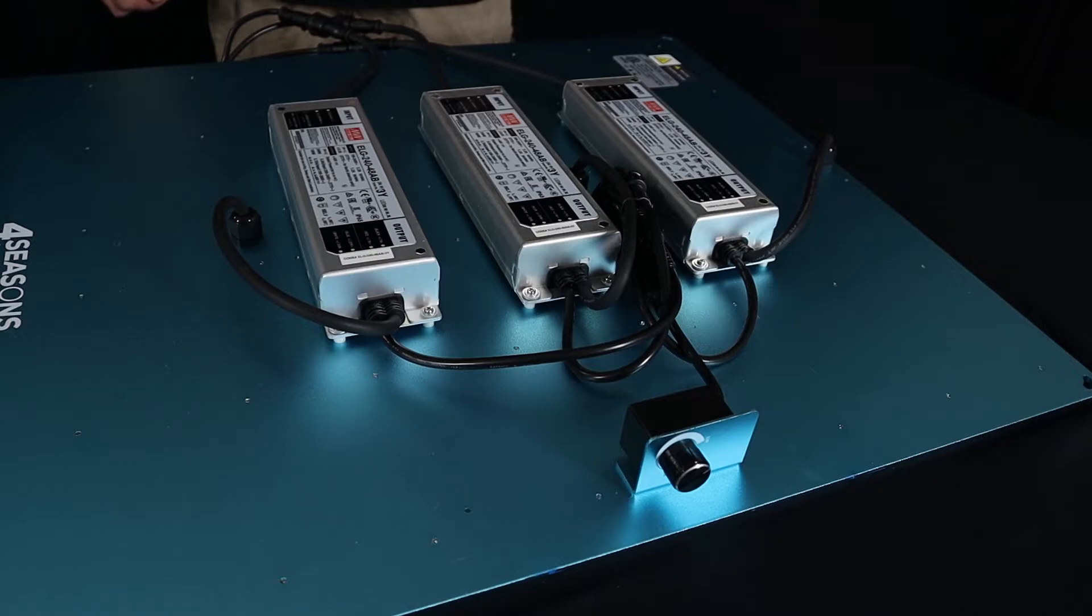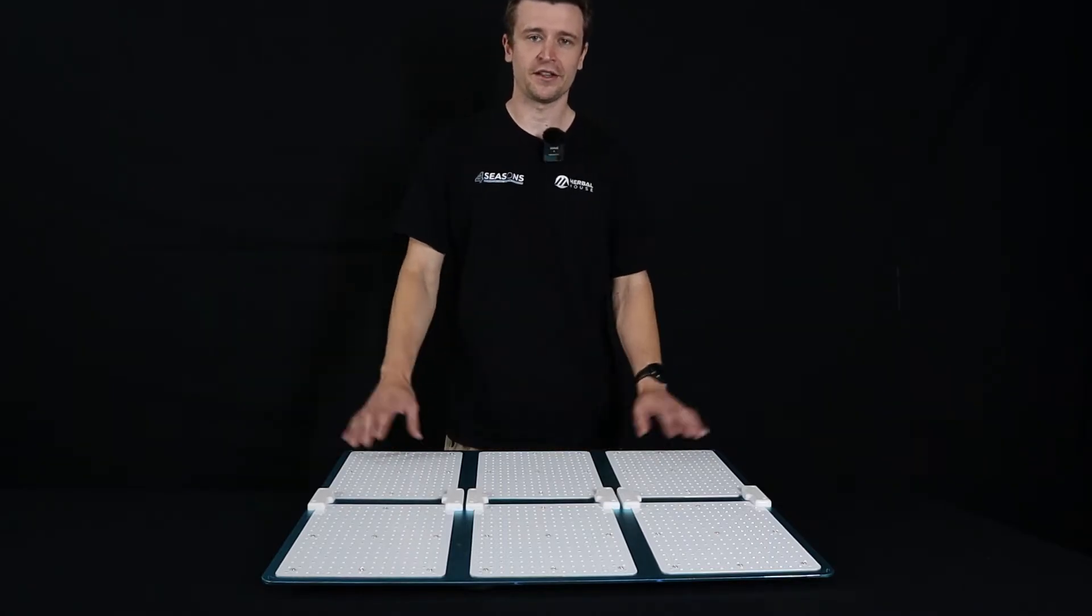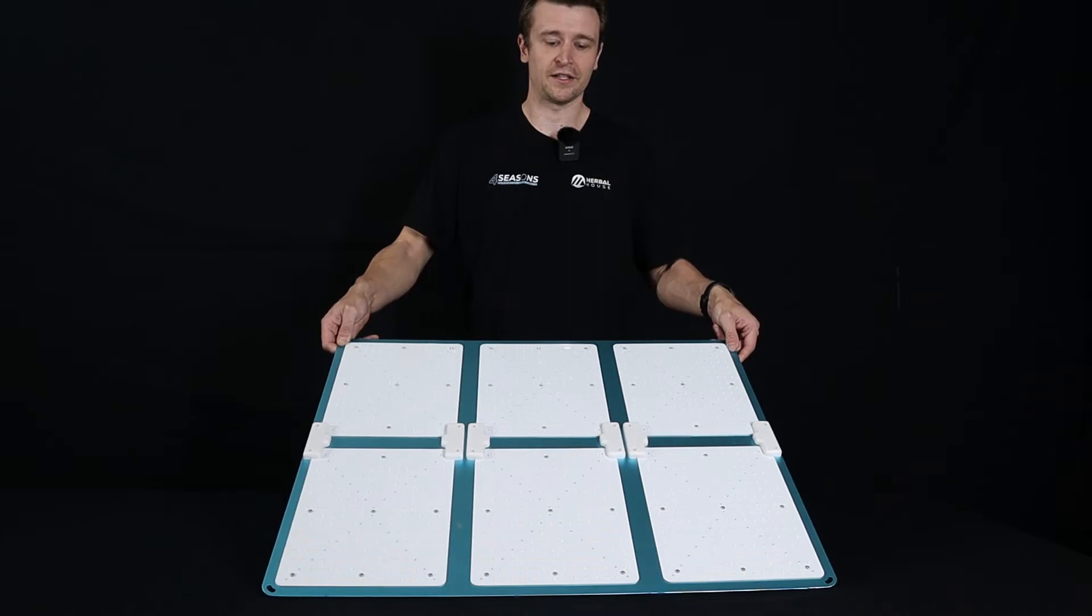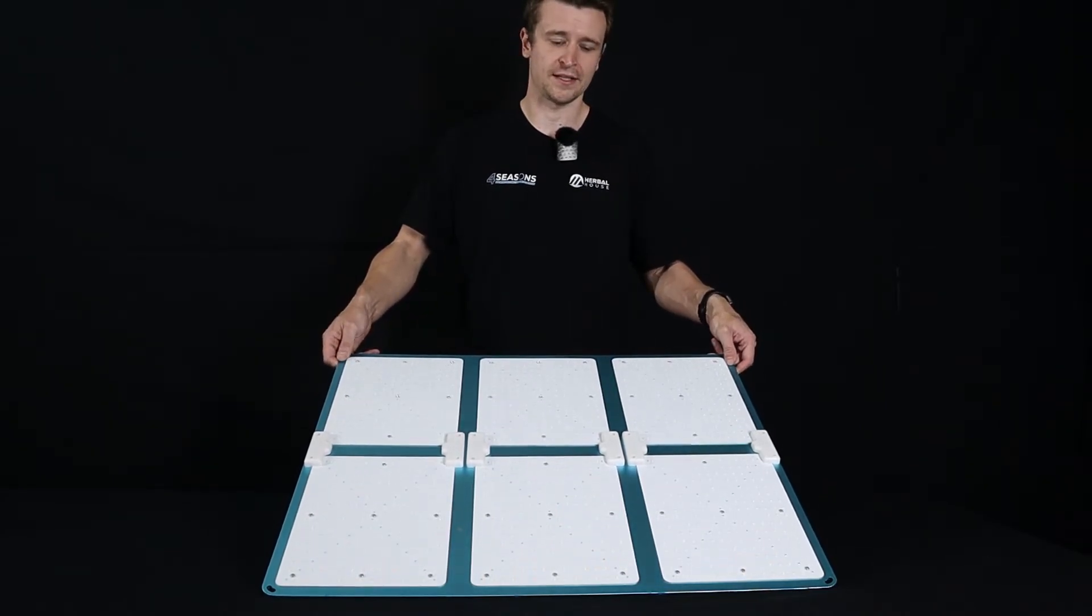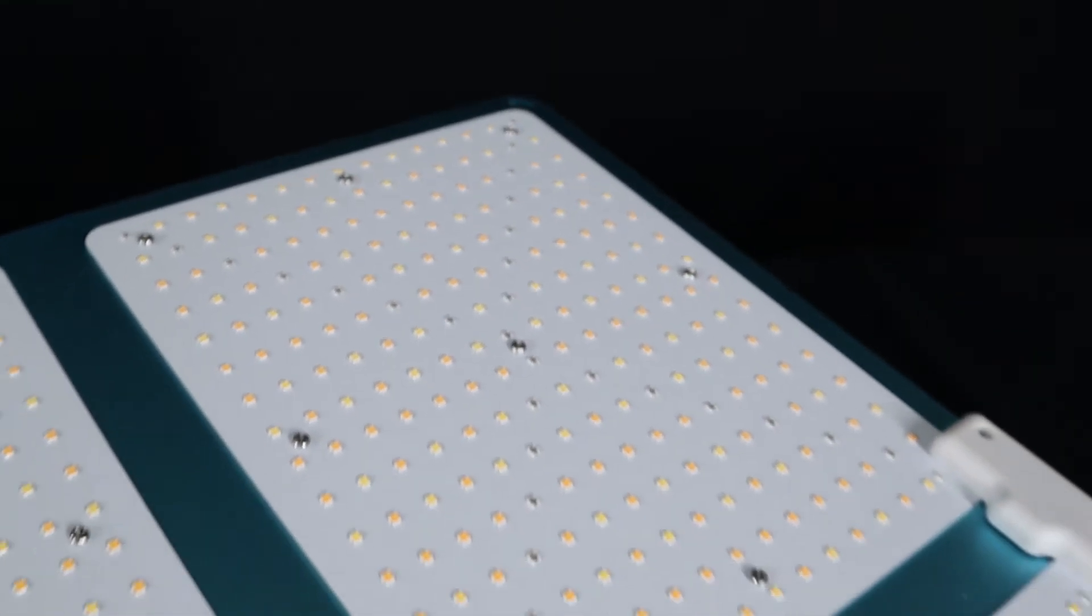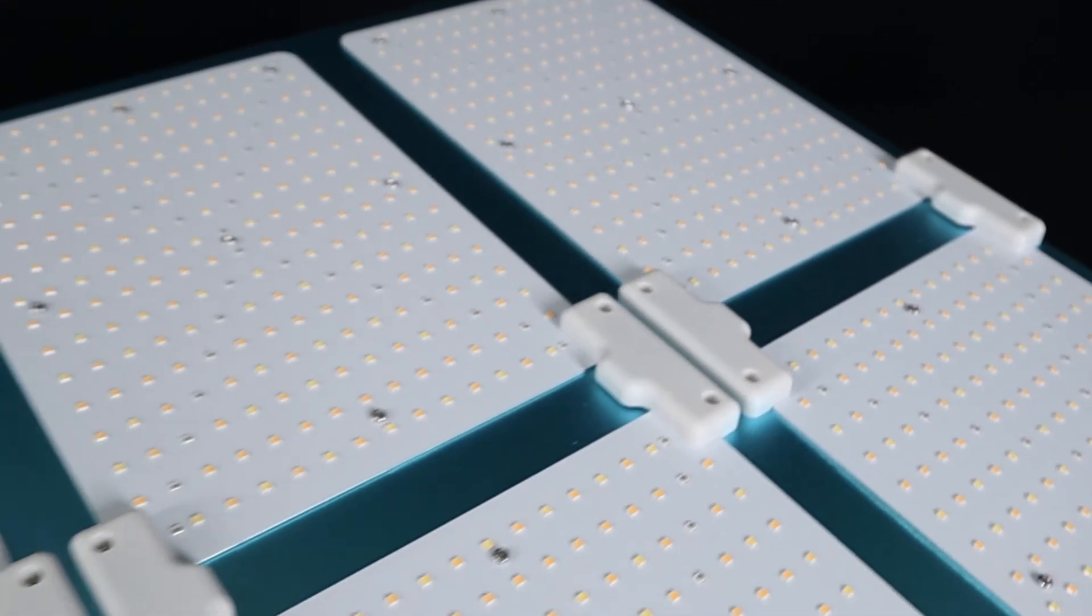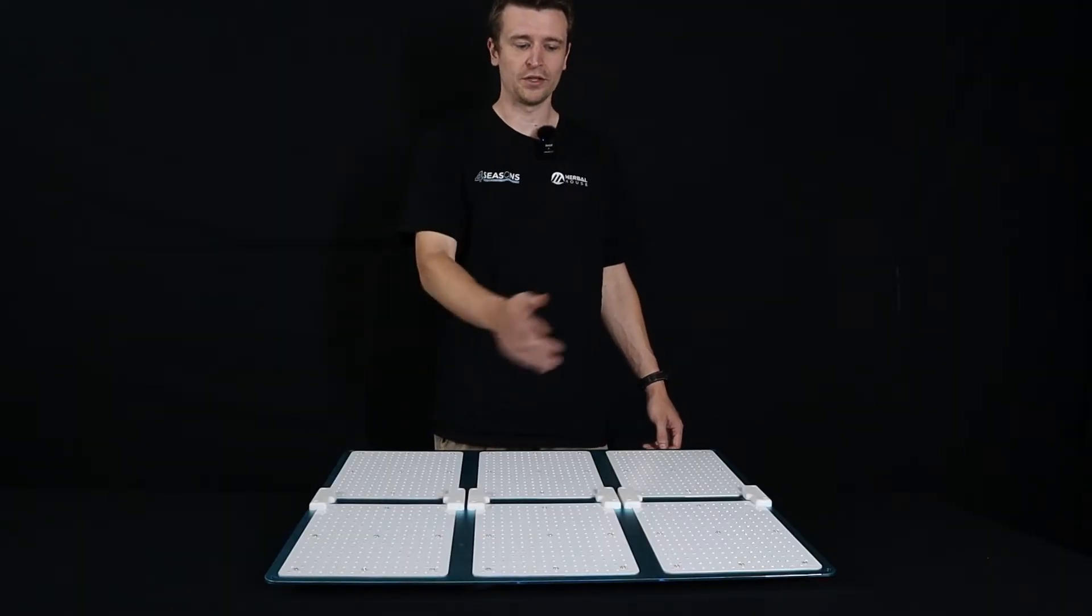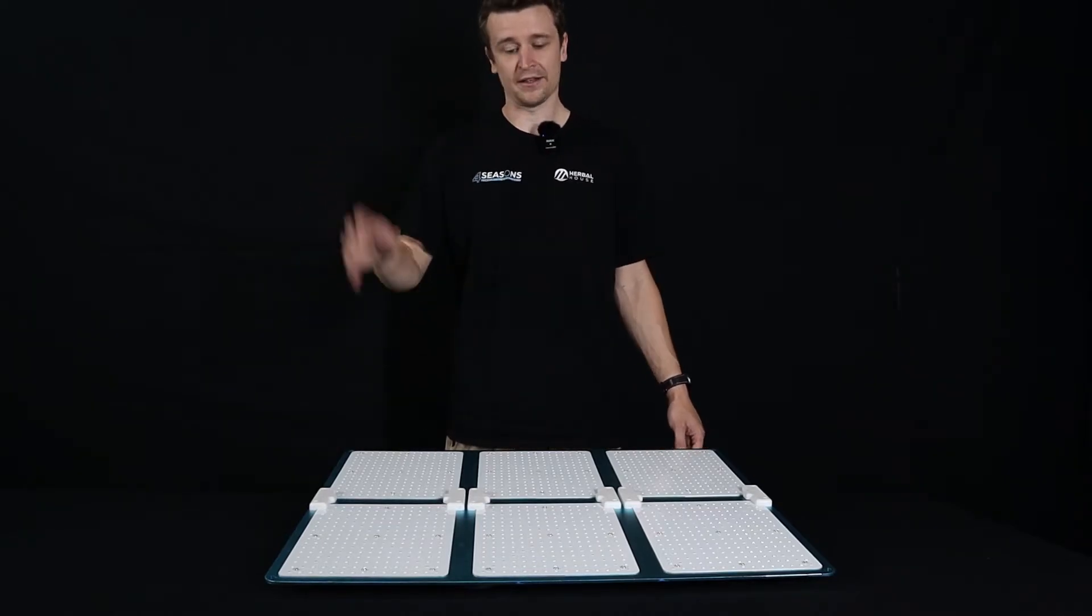Now we're on the front side of the panel here. You're not going to be looking at this very much when it's installed. This is what your plants are going to see. Obviously going to be very bright but with the panel off now we can show you what's going on on the front side. We have six boards laid across this panel.